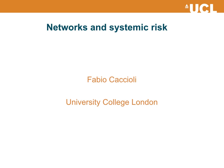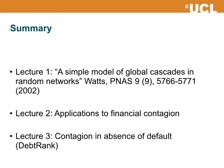In these lectures we will discuss the application of networks to the study of systemic risk. In the first lecture we will discuss the simple model of global cascades in random networks introduced by Duncan Watts in 2002. In the second lecture we will discuss the application of this model to financial networks contagion. The third lecture will also be devoted to financial contagion, but we will look at a different class of models, and in particular the DebtRank algorithm.